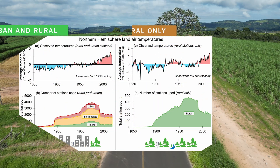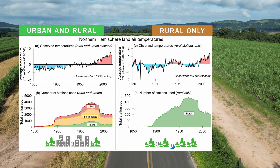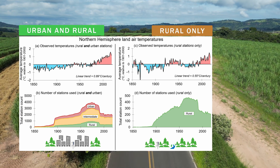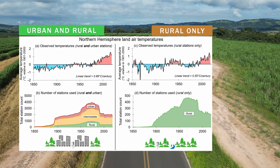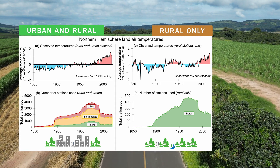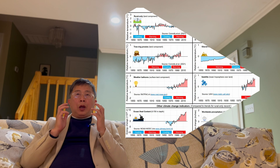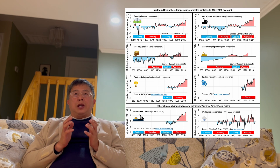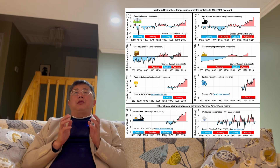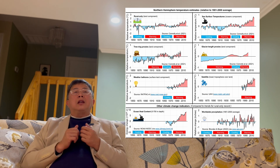Their analysis shows that when you exclude urban data, the global warming estimate is reduced by more than 30%. It also suggests an almost cyclical warming, cooling, warming pattern — which is not what you would expect from human-caused global warming from CO2 and other greenhouse gases. Instead, it suggests that the IPCC's AR6 report may have underestimated the role of natural factors. This warming and cooling pattern is also observable in ocean temperatures, glacier behavior, tree rings, and satellite temperature records.